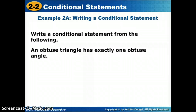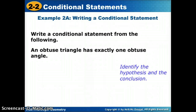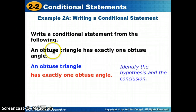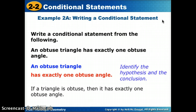To write a conditional statement from 'an obtuse triangle has exactly one obtuse angle,' we think about what is conditional on the other. We need an obtuse triangle before we can say it has exactly one obtuse angle. So the hypothesis is 'a triangle is obtuse' and the conclusion is 'it has exactly one obtuse angle.' Most of the time whatever comes first is the hypothesis, but not always. In if-then form: 'If a triangle is obtuse, then it has exactly one obtuse angle.'